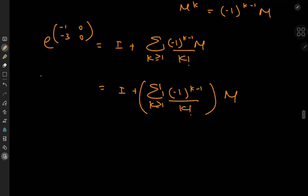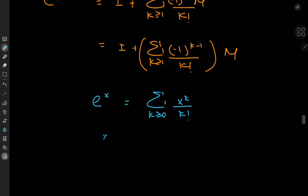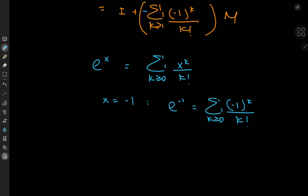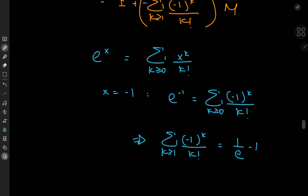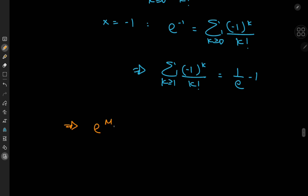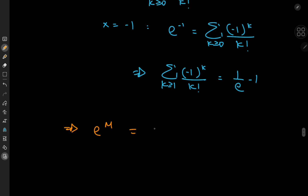Using the exponential series expansion e^x = sum of x^k / k!, setting x = -1 gives e^(-1) = sum of (-1)^k / k!. Accounting for the sign, the sum over positive integers k of (-1)^(k-1)/k! equals 1/e - 1 (with the k=0 term being 1). Therefore e^M equals the identity matrix I plus (1 - 1/e) times M.